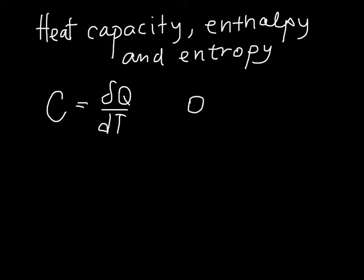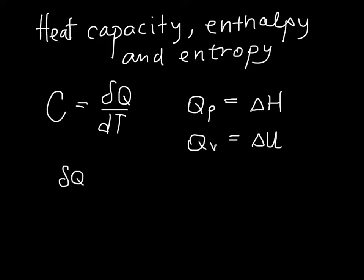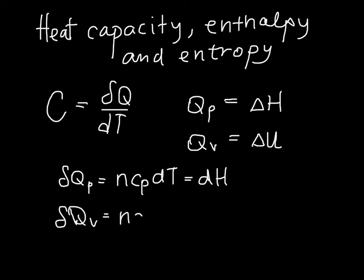For constant pressure processes, the heat transferred at constant pressure is equal to the change in enthalpy, and for constant volume processes, the heat transferred is equal to the change in internal energy. This gives us the relationships: delta q at constant P is n·Cp·dT, which equals dH, and delta q at constant volume is n·Cv·dT, which equals dU.